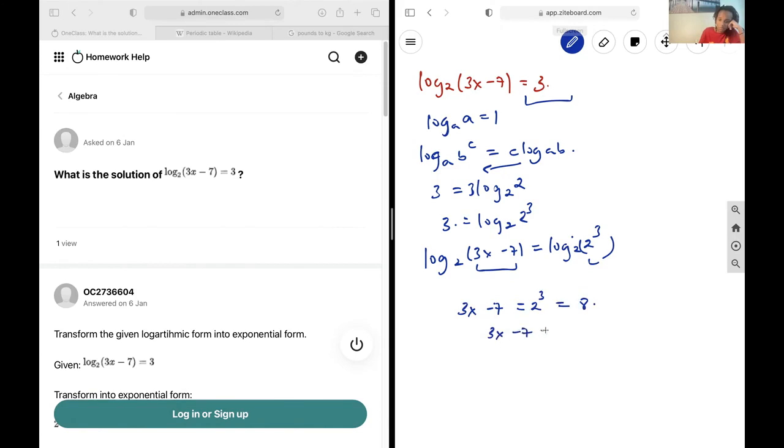So 3x - 7 = 8. Let's isolate our 3x, so we get 3x = 7 + 8, that's going to give us 15. And then let's just divide out our 3 to give us x = 5, and that's going to be your final answer.